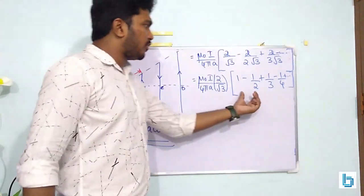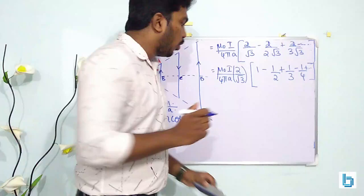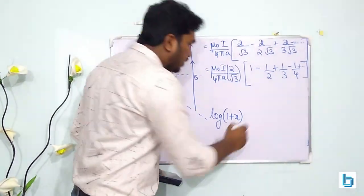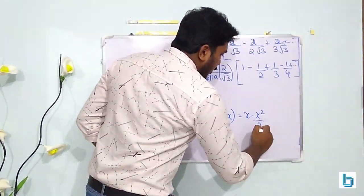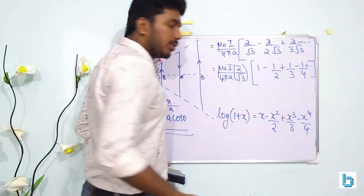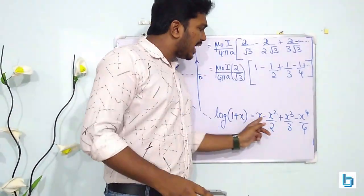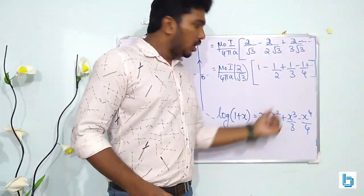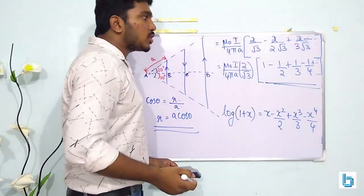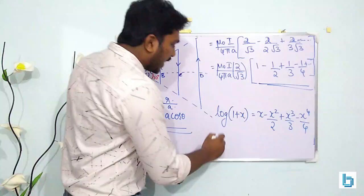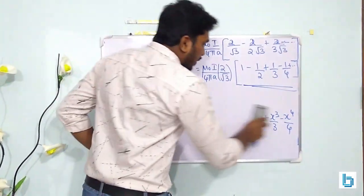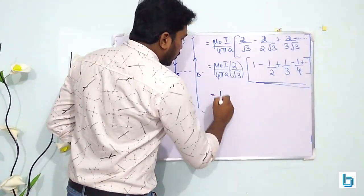This series should look familiar — it is the expansion for log(1 + x), which equals x − x²/2 + x³/3 − x⁴/4 + .... Here x = 1, so the bracket 1 − 1/2 + 1/3 − 1/4 + ... equals log(1 + 1) = log 2.